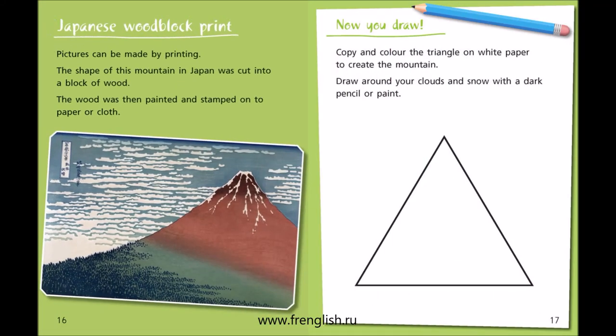Japanese Woodblock Print. Pictures can be made by printing. The shape of this mountain in Japan was cut into a block of wood. The wood was then painted and stamped onto paper or cloth. Now you draw: copy and colour the triangle on white paper to create the mountain. Draw around your clouds and snow with a dark pencil or paint.